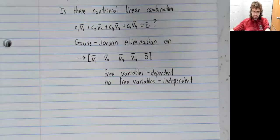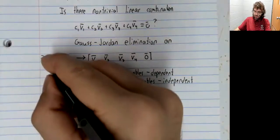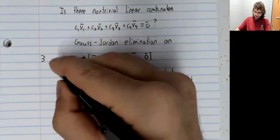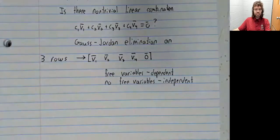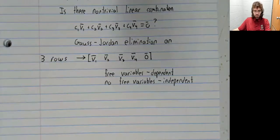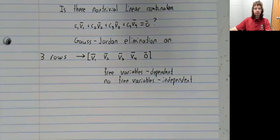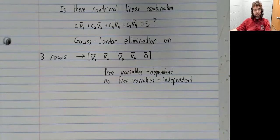That means that this matrix has three rows. Now, free variables correspond to pivot positions. And a pivot position is the first non-zero entry in a row. In other words, you cannot have more than one pivot position in a row.